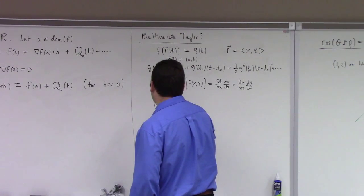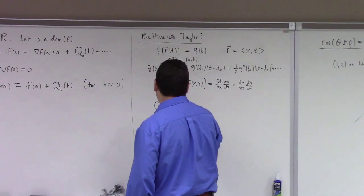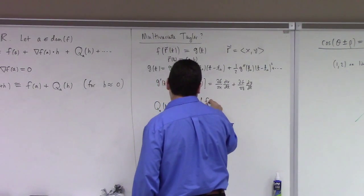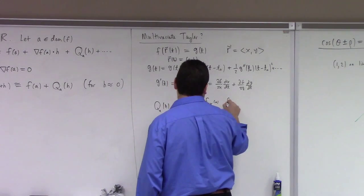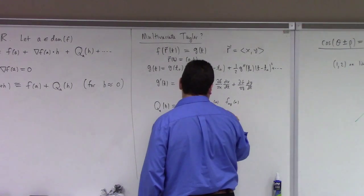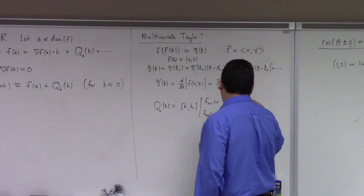You keep doing this, you drive the chain rule. Anyway, I'm just going to get to your answer. Basically, what Q of H ends up being, it ends up being like this, H1, H2 times Fxx at A, Fxy at A, Fxy at A, Fxy at A, times H1, H2.